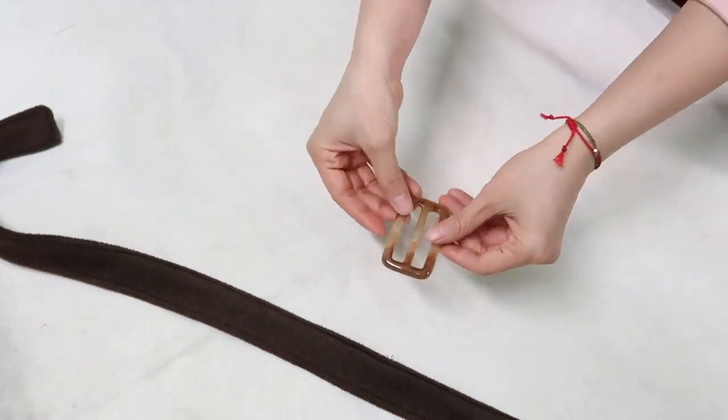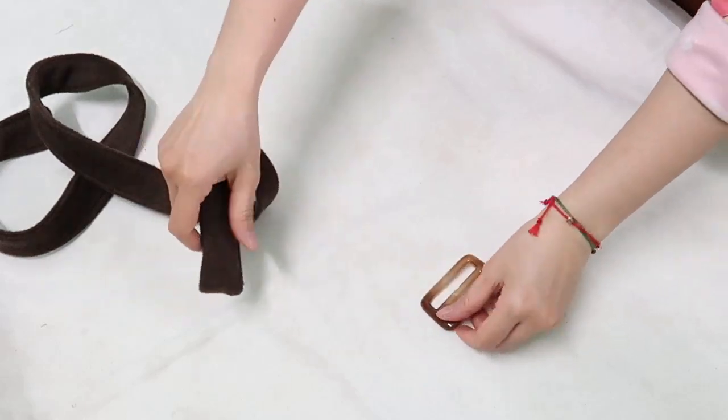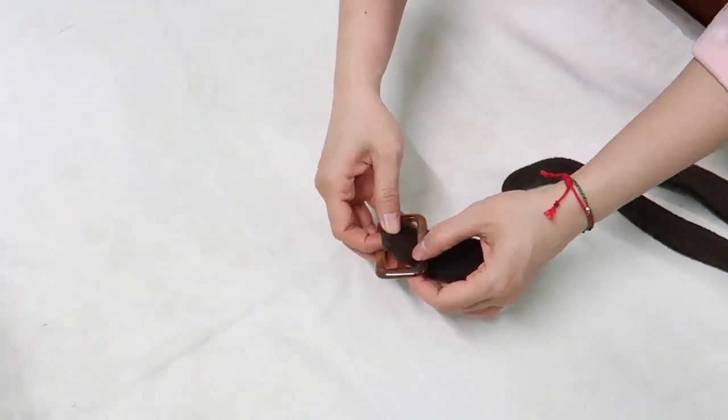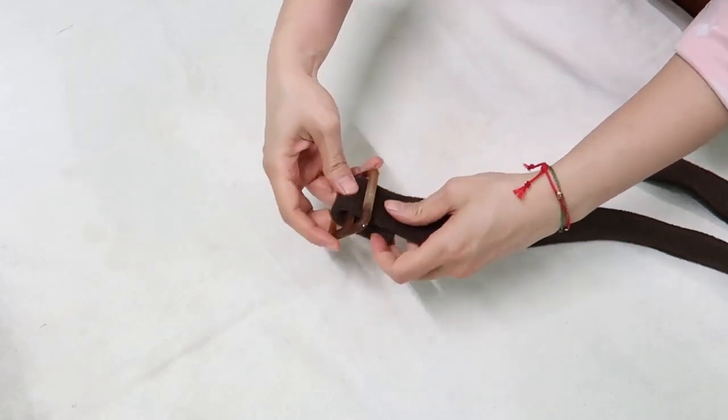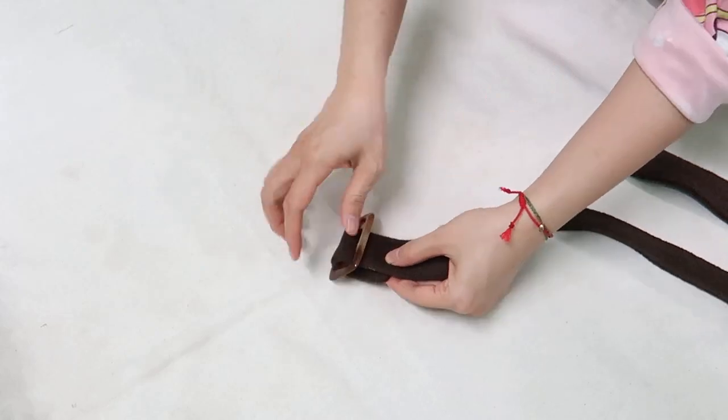I already prepared this thing, but I don't know how to name it. I bought it at the sewing accessory shop. Now, I'm going to put the strap through it and stitch to close. And I got a belt. Very simple, right?